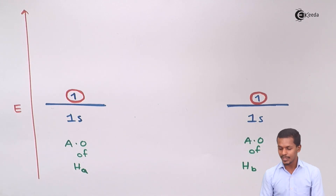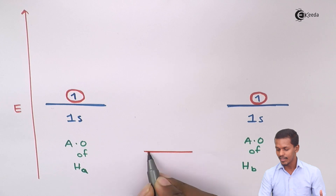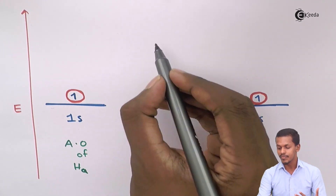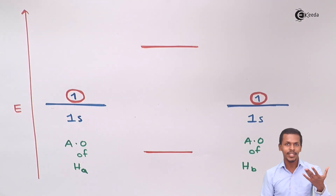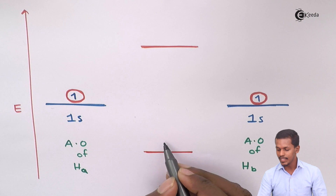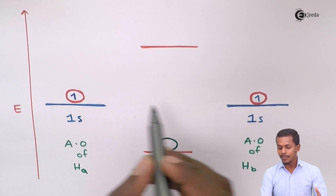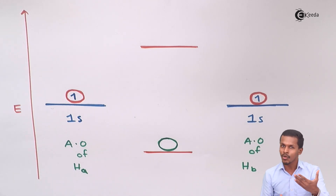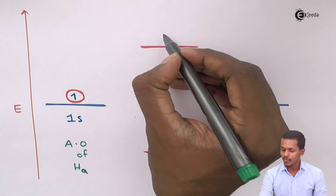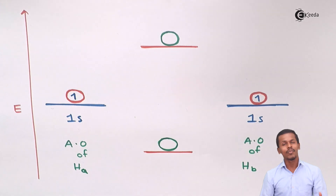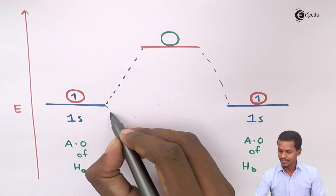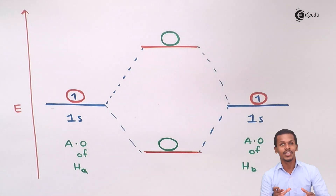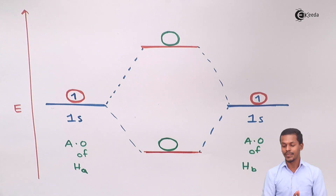We will get two energy levels. One will be at the lowest energy level — that is the bonding molecular orbital — and one will be at the maximum energy level. The lower energy level, as discussed in the salient features of MOT, will be the bonding molecular orbital. Since two atomic orbitals are being combined, the number of respective molecular orbitals will also be two. This energy gap on both sides will be the same because it is a symmetrical molecule.